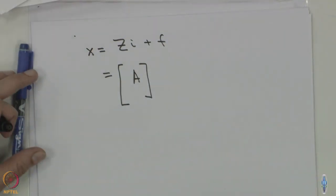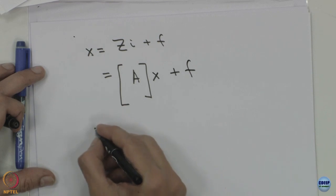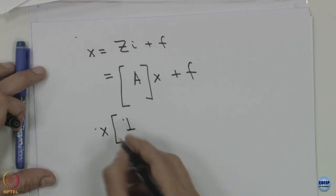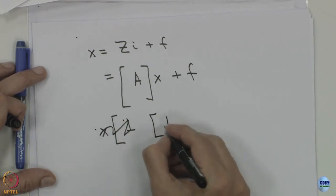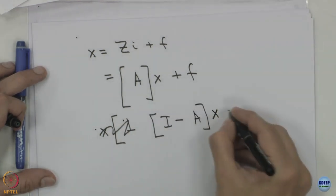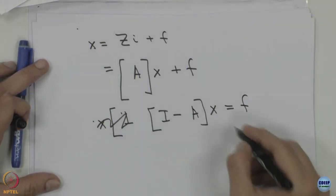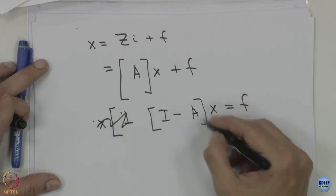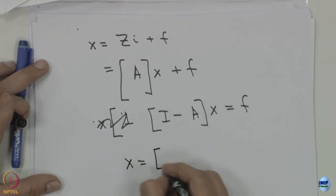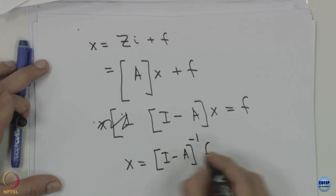We can write z_ij as a combination of A into x. So we have x equals zi plus f, which is nothing but A times x. So this is Ax plus f. We can take x with the identity matrix: we have identity matrix I minus A, and once we take it to this side, (I minus A) times x equals f. Now we can get x — if we know the final demand, what will be the values of x. So x will be — we can take the inverse of this — (I minus A) inverse into f.